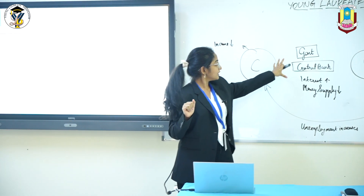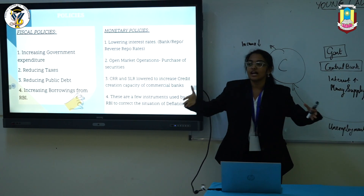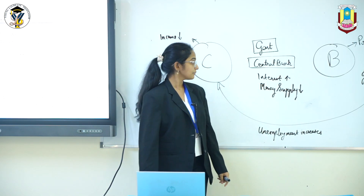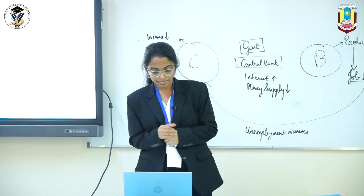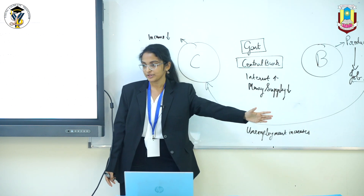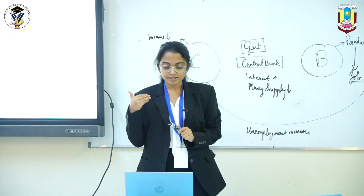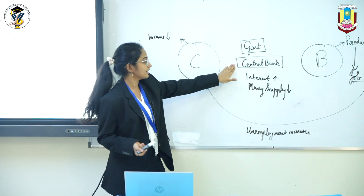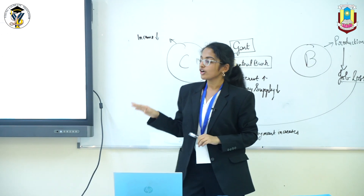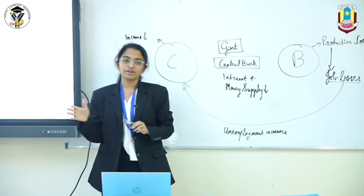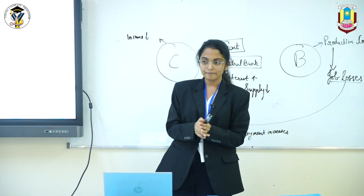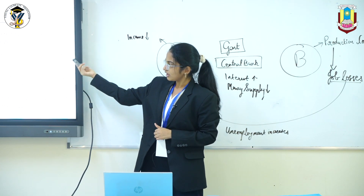Another fiscal policy is reducing taxes. When the government imposes lesser taxes on people, they have more disposable income to spend in the economy, so consumer spending increases and this corrects deflation. Reducing public debt means when the government borrows less from the public, the public has more money to spend. Increasing borrowings from the RBI means the government has more money to spend on the public, so the public gets more money. In brief, monetary policies also involve the central bank using quantitative and qualitative instruments to correct deflation.